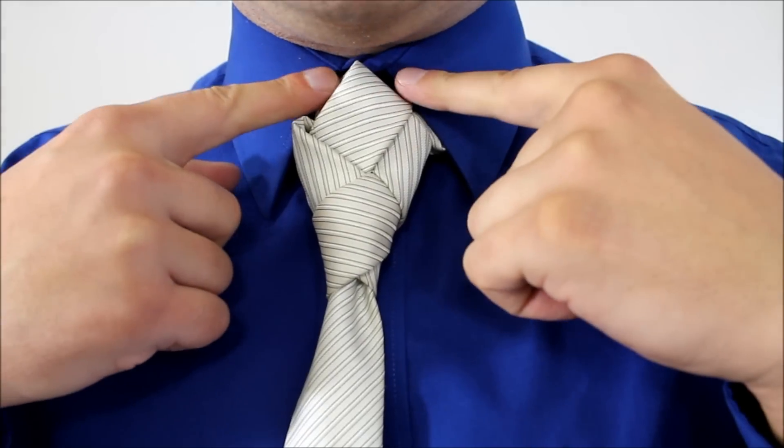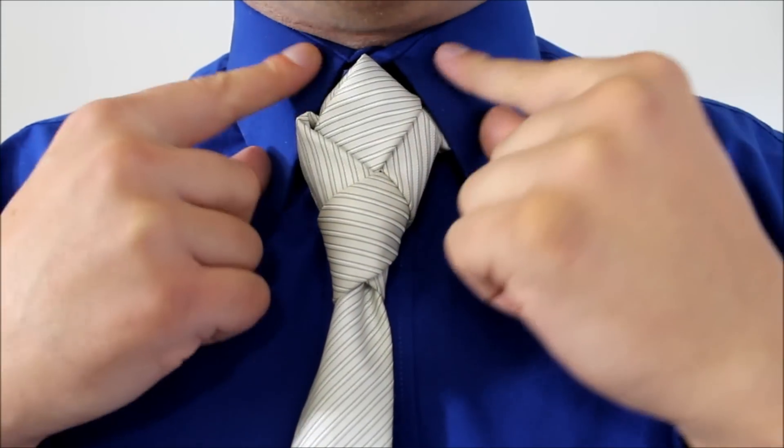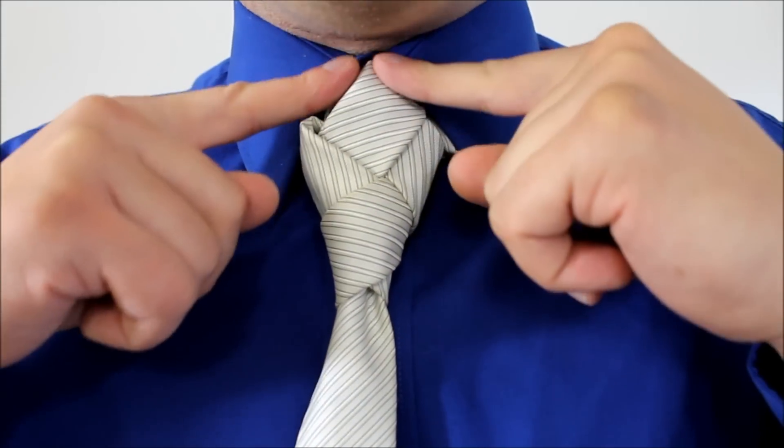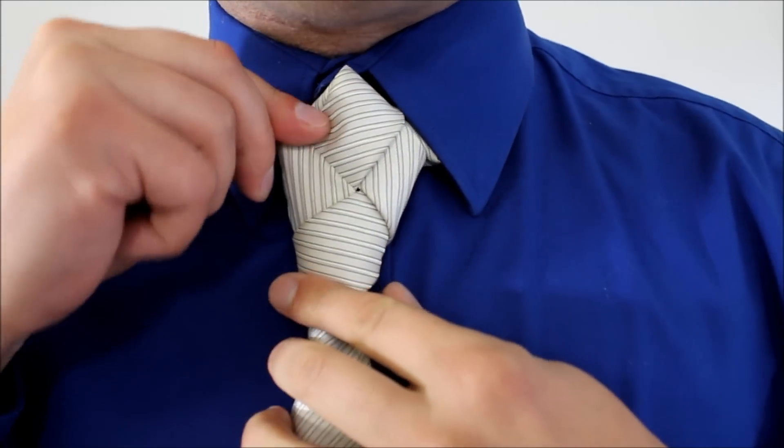And there we go. So we can have this diamond shaped. If you have a widespread collar, it's not going to work. So if you have a collar that's closer, you're going to have this perfect shape in here.